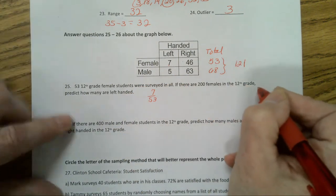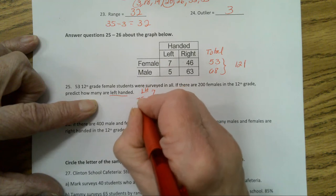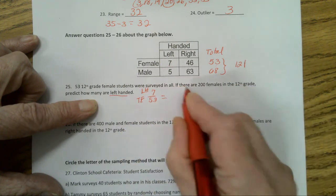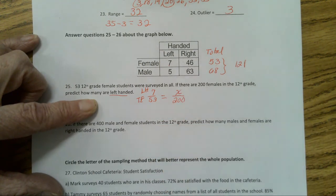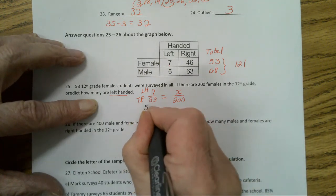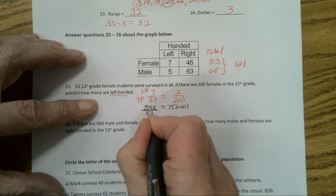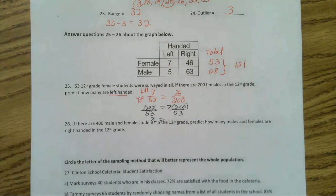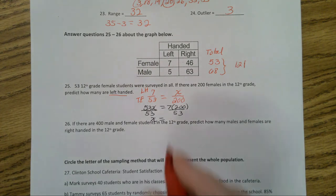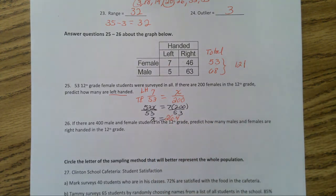So now let's go on and answer this number 25. If there are 200 females in the 12th grade, predict how many are left handed. So 7 out of 53 are left handed. These are left handed. I'm going to do LH for left handed, TF for total female equals, if there are 200 females, how many do we think would be left handed? Now I'll do my cross products, 53 times x equals 7 times 200, then divide both sides by 53, so we end up with our x. And x equals, you multiply, divide, you're going to get 26.4. 26.4 out of 200 people, 200 females would be predicted to be left handed.